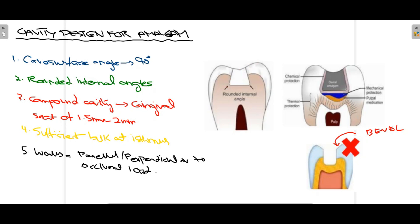Secondly, you can see the internal angles that are present — these internal angles should be rounded, so that the cavity is more retentive and occlusal stress can be borne more optimally. When a compound cavity is present involving more than one surface, the gingival seat should be 1.5 to 2 mm. Now, an important difference between dental amalgam and composite is that dental amalgam does not bond to the tooth structure — it is retained in the specially prepared cavity. There is mechanical retention, as compared to composite which has chemical retention and bonds to the tooth.